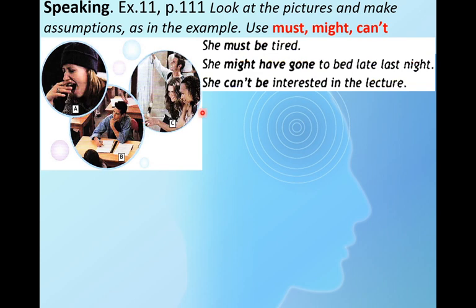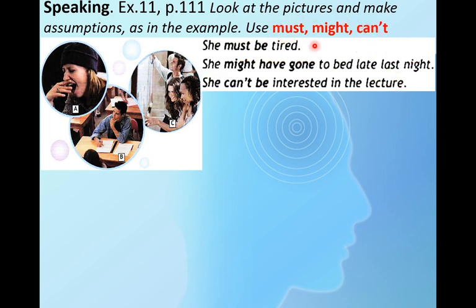For example, to express certainty: she must be tired — должно быть, она устала. To express doubt or probability: she might have gone to bed late last night — мы предполагаем, это прошедшее время: she might have gone to bed. And: she can't be interested in the lecture — не может быть, чтобы она была заинтересована в лекции. All three modal verbs used.